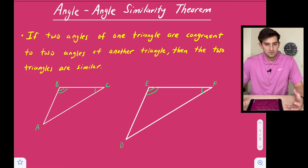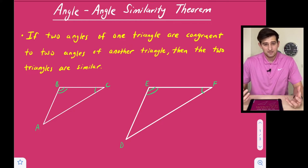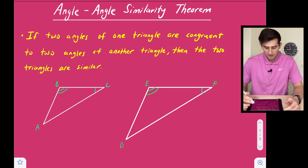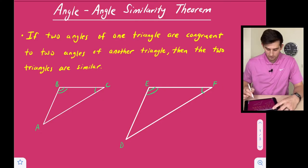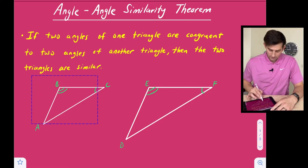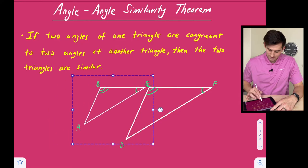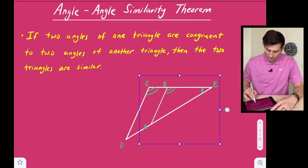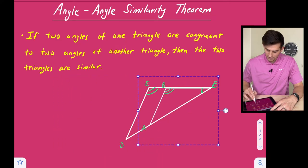Remember about similar shapes — they have the same shape but just a different size. There's been some kind of similarity transformation that has taken place. This similarity transformation we call a dilation, which makes a shape smaller or bigger. So if we take our triangle ABC right here and slide it or translate it over here, we can map vertex C on top of vertex F.